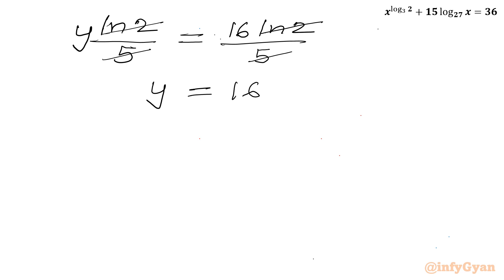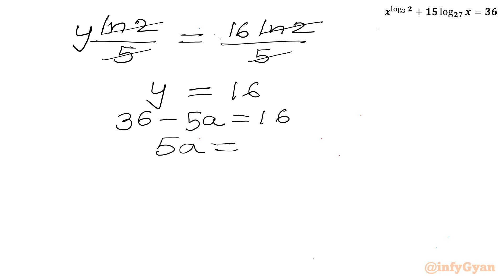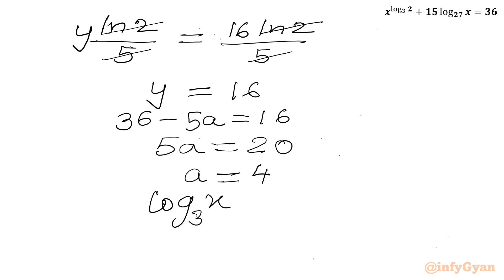Now back-substituting: y was our substitution 36 minus 5a, so 36 minus 5a equals 16, giving 5a equals 20, so a equals 4. And since a was our substitution log x base 3, we have log x base 3 equal to 4, so x equals 3 power 4, which equals 81.